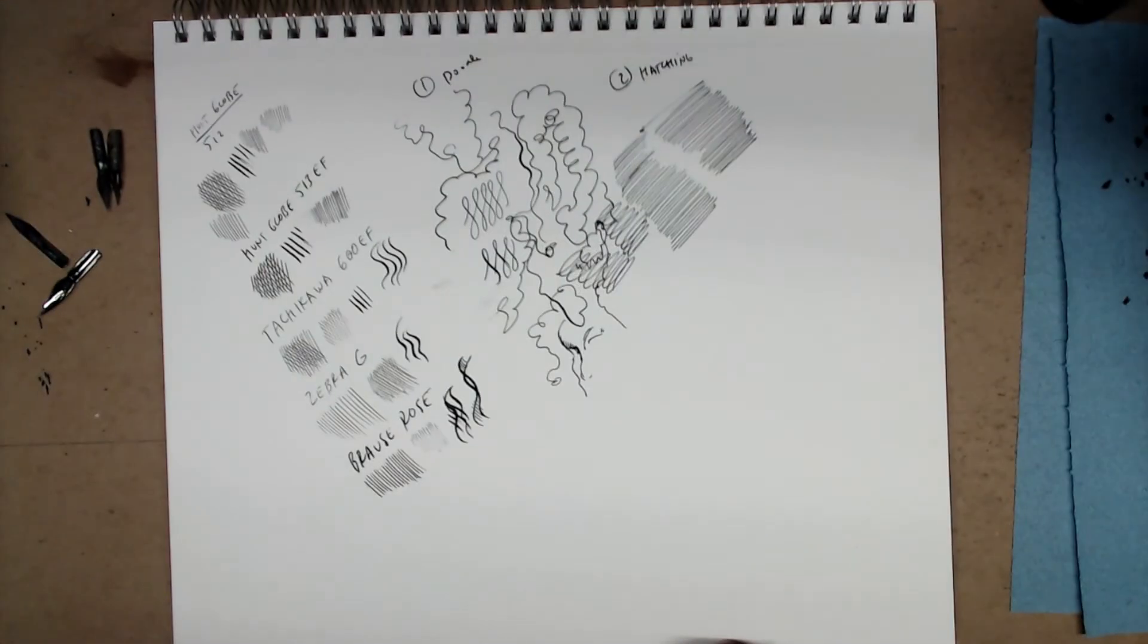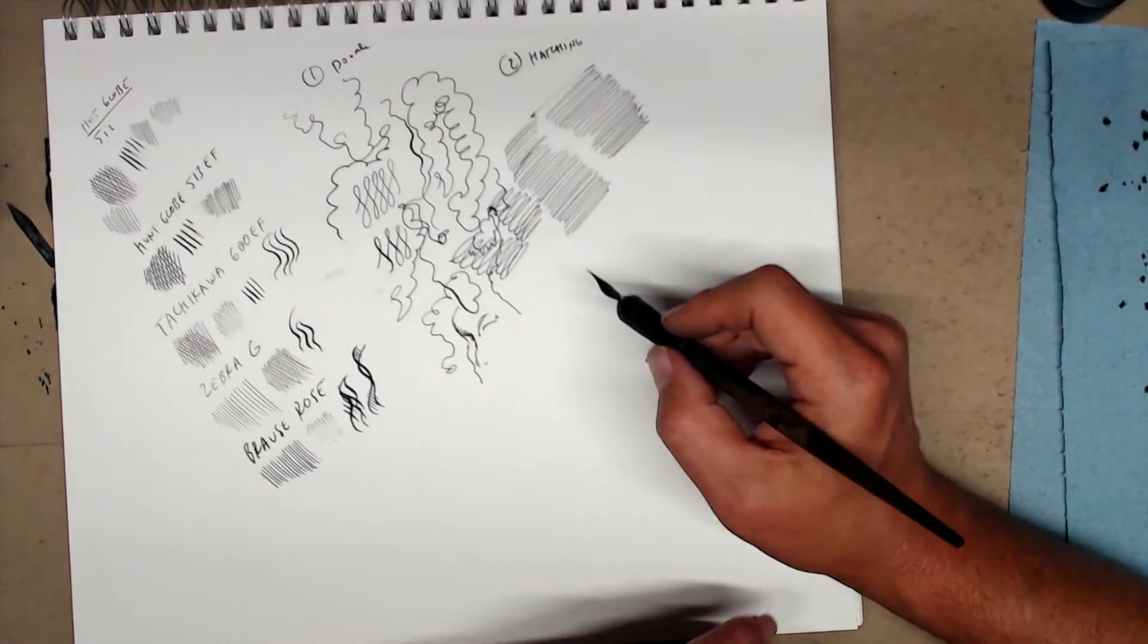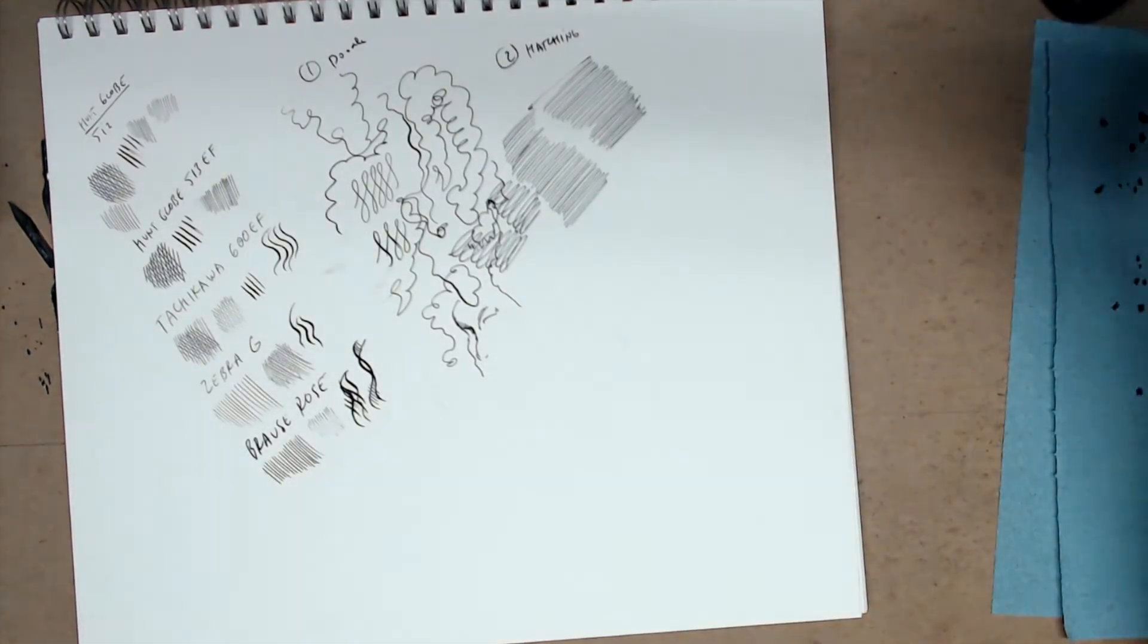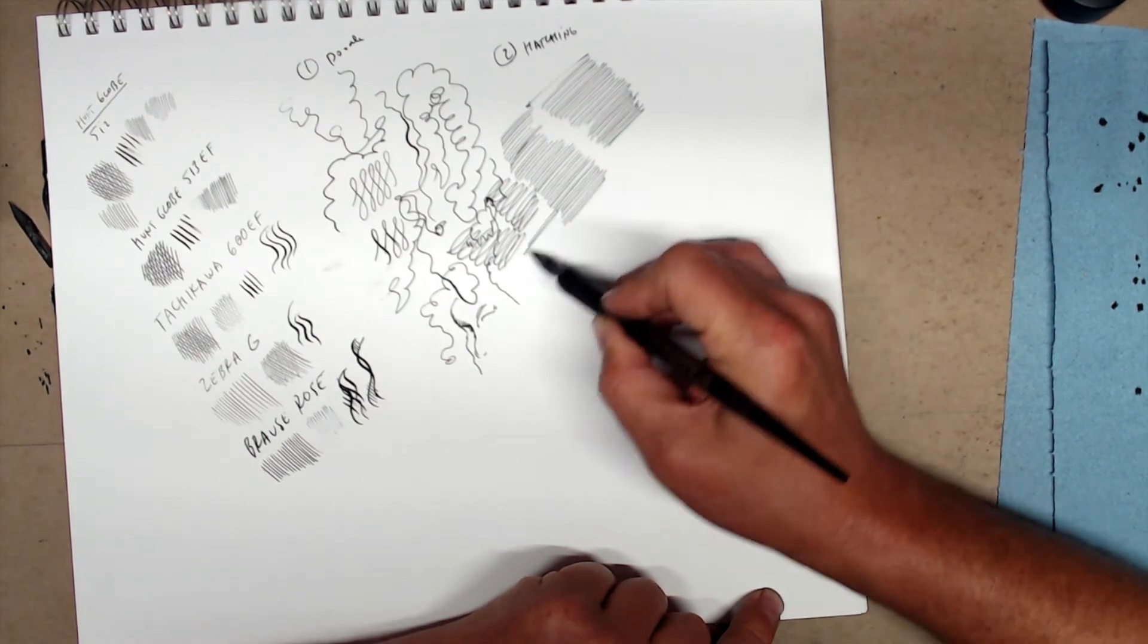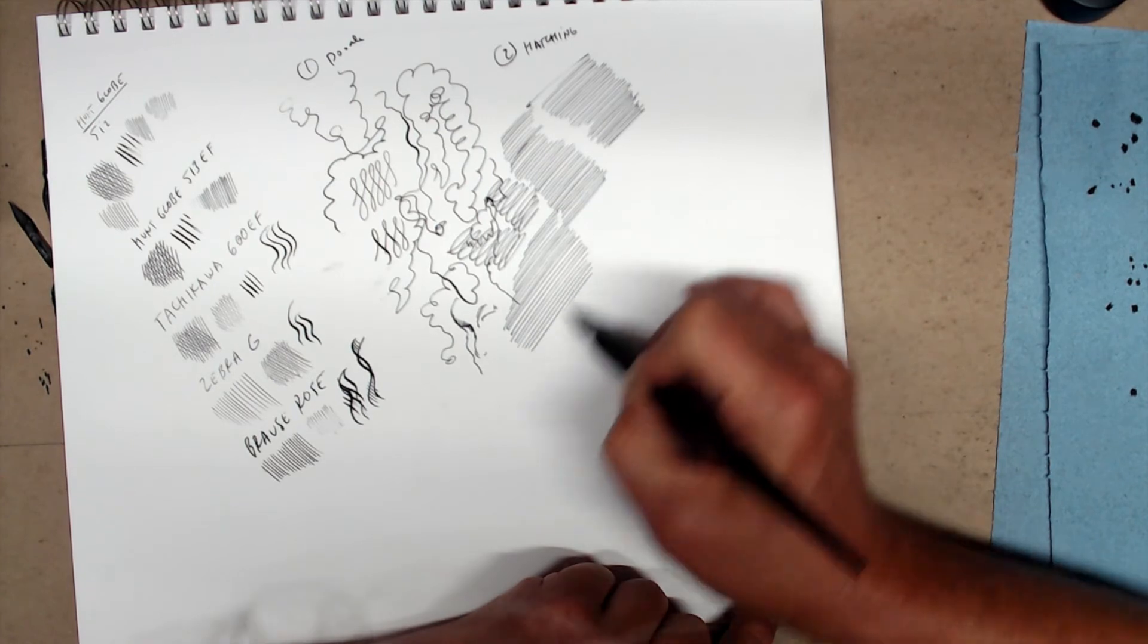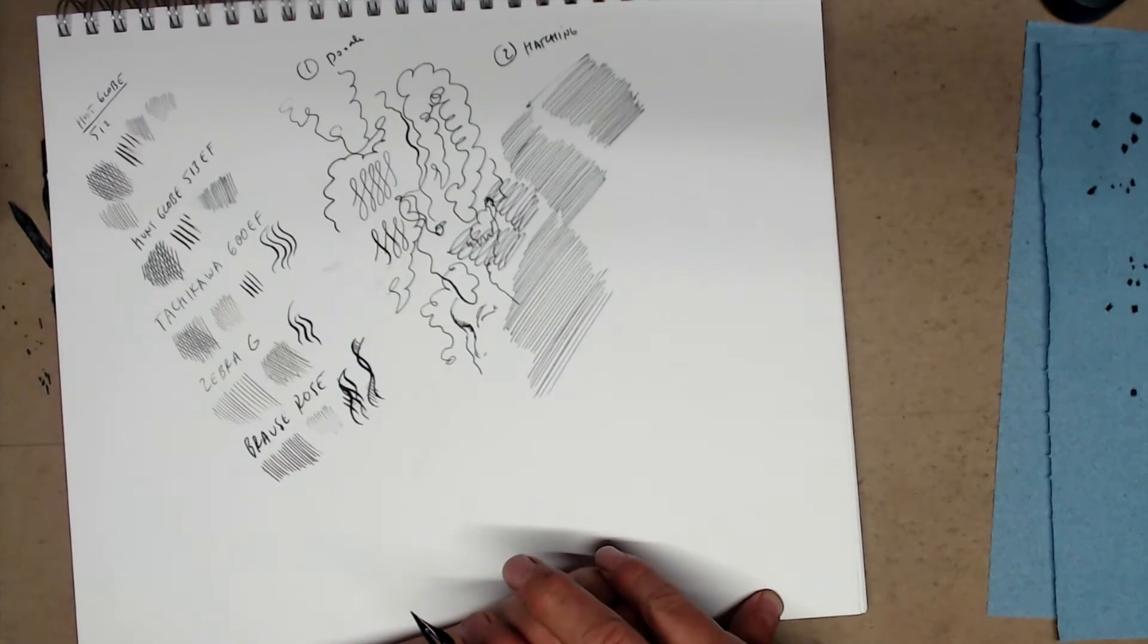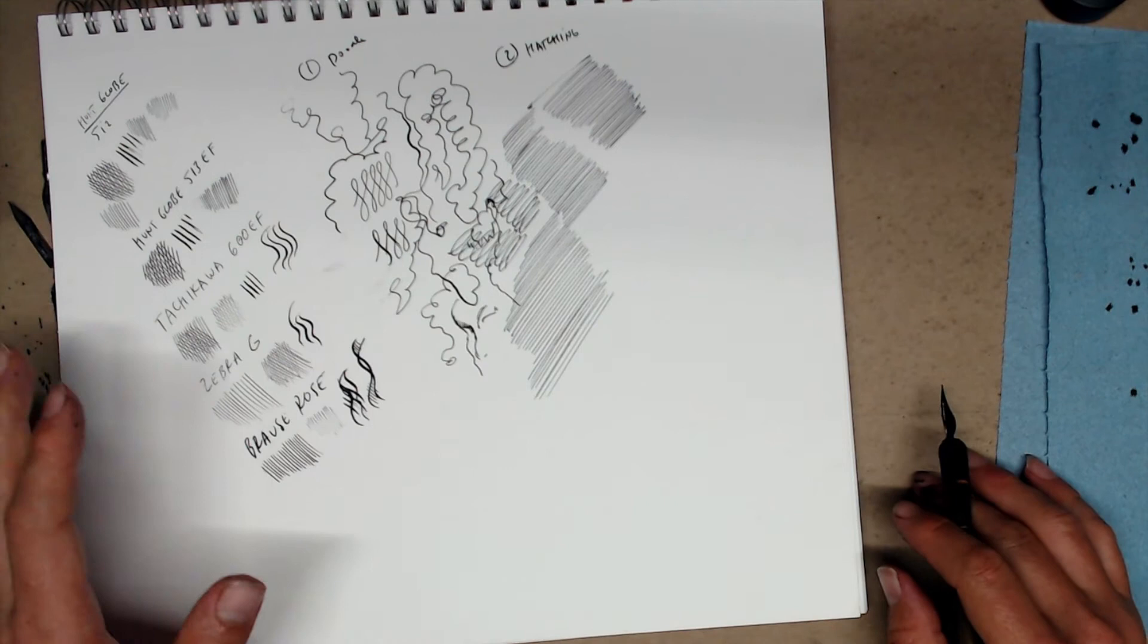This is what I call elbow hatching. Elbow hatching has the advantage of being really straight and allowing me to apply really large areas of hatch. So I'm using my entire fulcrum in the elbow. So you can see that if I want, I can apply really long, really even areas of hatching. So this is good for starting the illustration, for filling large areas.